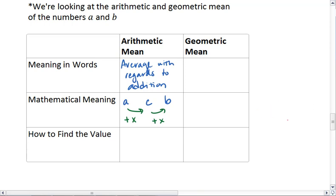The way we find the arithmetic mean is we add our two values together and then divide by 2. Or if you have 3 values, you add those values together, divide by 3, and so on.